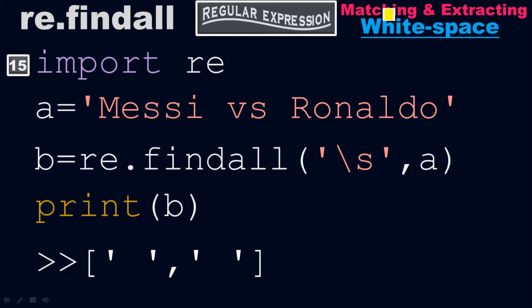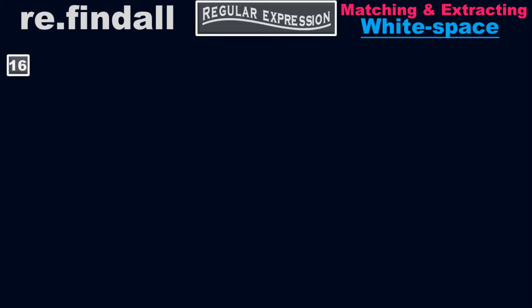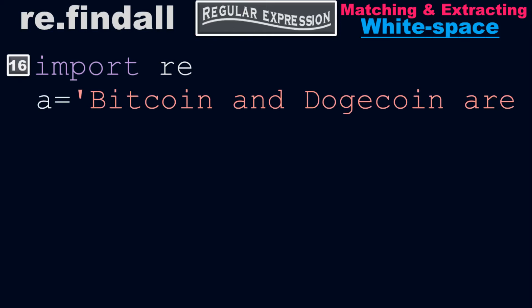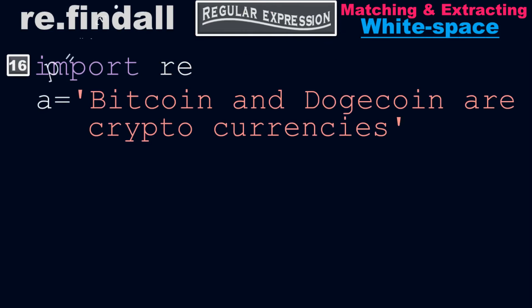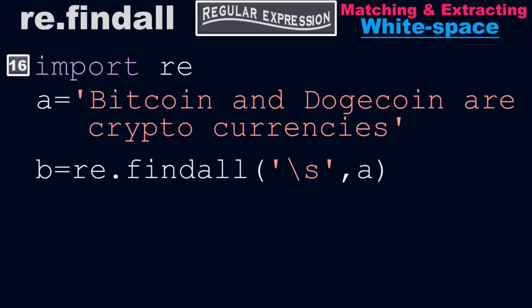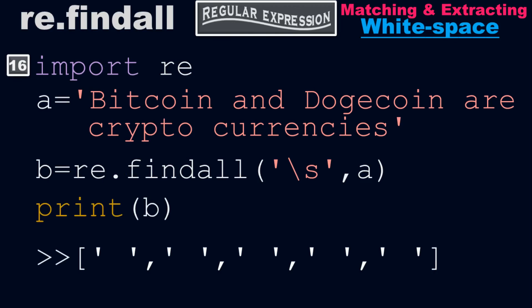In example number 16, we import the regular expression library, then set a equals to 'bitcoin and dogecoin are cryptocurrencies', and b equals to re.findall with backslash-s (\s) comma a. When you run it, you get the output. We are matching and extracting all white spaces from a using this regular expression.